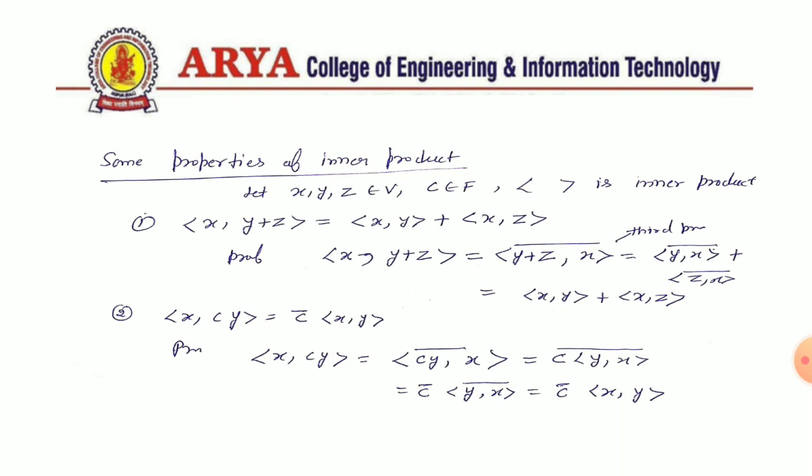Now we discuss some properties of inner product. The first property: inner product of (X, Y+Z). By the definition of inner product, we write it as the complex conjugate of inner product of (Y+Z, X). Then by using the third condition, we separate it as the complex conjugate of inner product of (Y, X) plus the complex conjugate of inner product of (Z, X), which gives inner product of (X, Y) plus inner product of (X, Z). The second property is: inner product of (X, CY) equals C-bar times inner product of (X, Y).